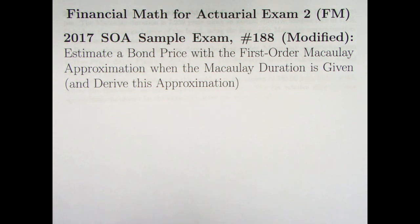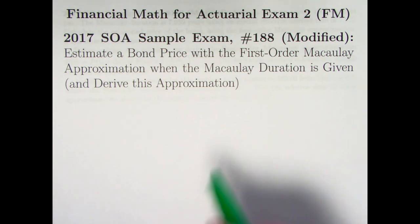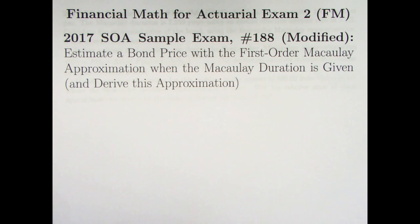This is video 162 in my Series N Financial Math for Actuarial Exam 2. In the last couple videos we've looked at something called the First Order Modified Approximation to approximate a bond price, or the change in a bond price, for a given change in the yield rate. We're going to continue that idea here in doing problem 188 from the 2017 SOA sample exam, where we modify it a bit.